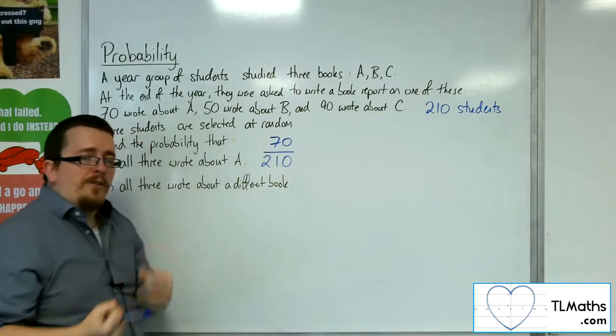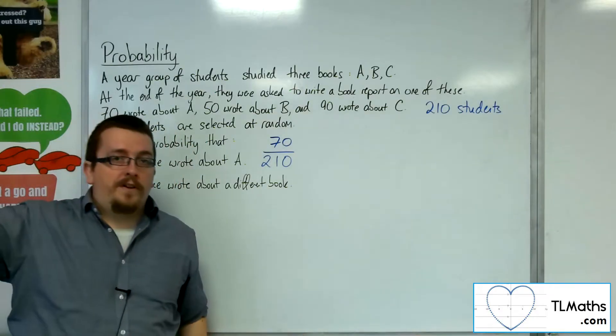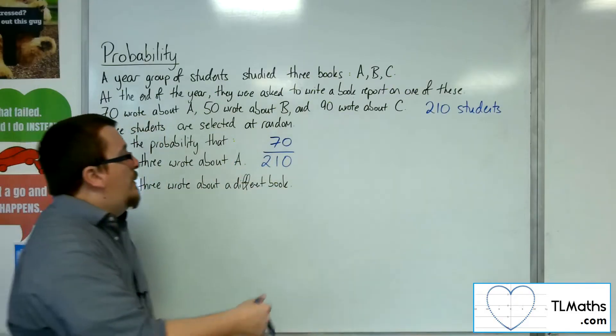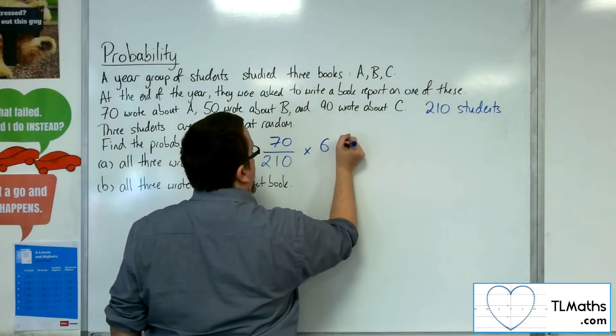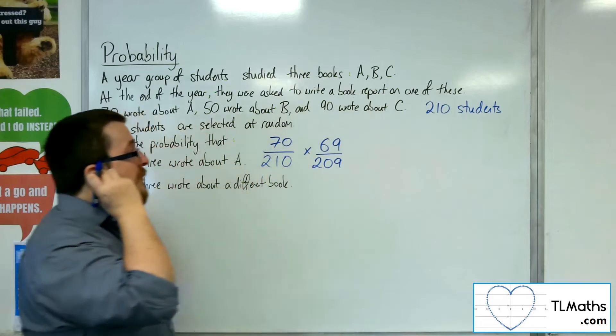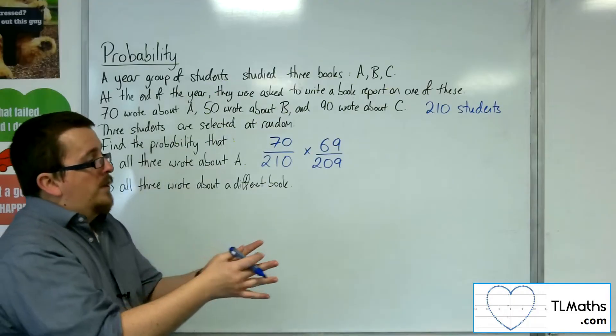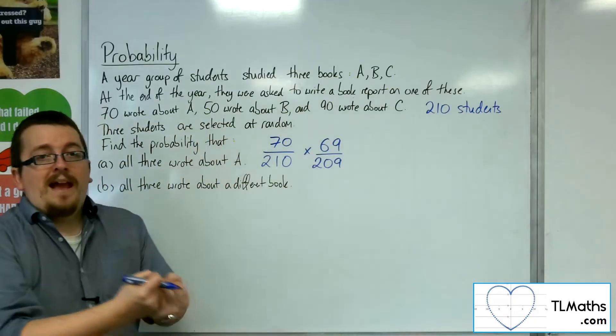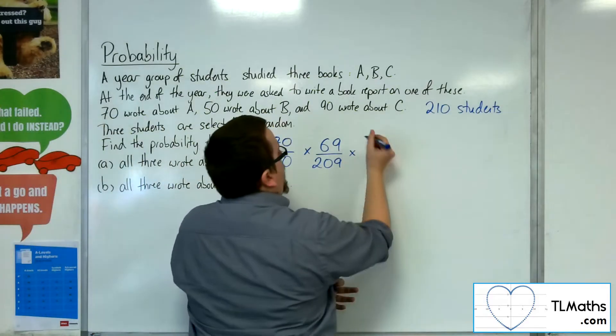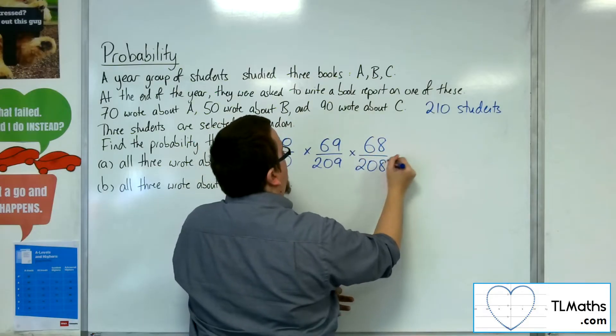That's the probability of picking out the first student. Now that student's been picked, they walk over to the side. So now I have 69 that are left out of 209 students. I pick out that one student and put them to one side. For the third choice, 68 students out of 208 remaining.